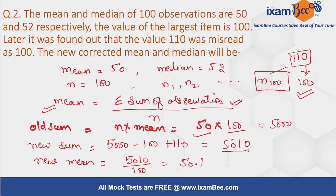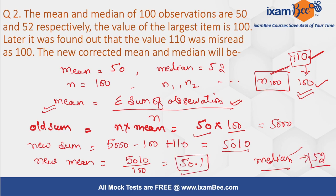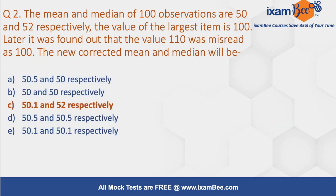Now, how to find the new median? In this case, the largest observation was 110 and it was replaced with 100. Since we are only changing one observation at the extreme, there will be no effect on the median. So the median remains 52. The correct answer for this question is 50.1 and 52, which is option C.